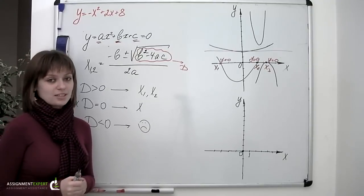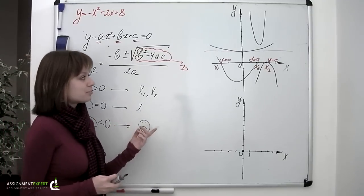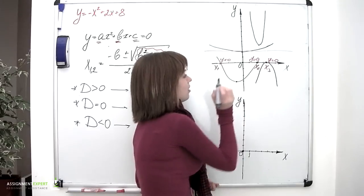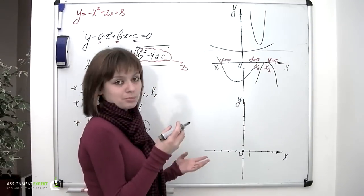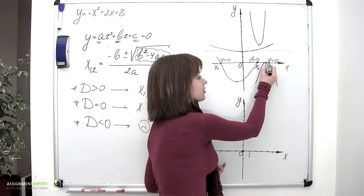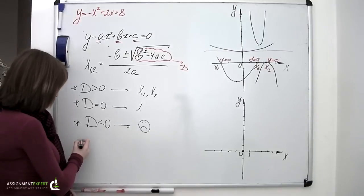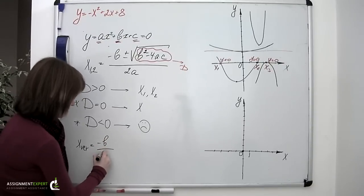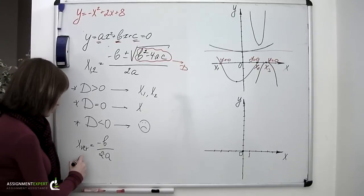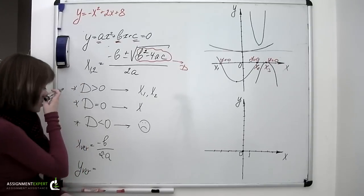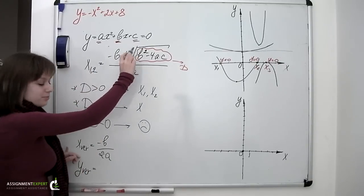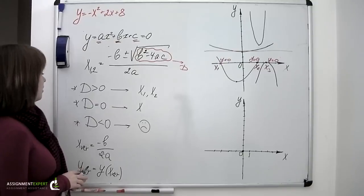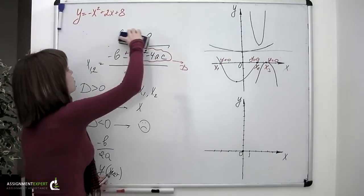Also, every parabola has its vertex. A point where the parabola reaches its minimum if the branches of the parabola are directed upwards like this, like right here or here. Or it might reach its maximum if the branches of the parabola are directed downwards like this one. The coordinates of the vertex are found like this. First goes the x-coordinate, negative b divided by 2 times a. And the y-coordinate of the vertex is found by substituting the x-coordinate of the vertex into the given equation. So this is how it goes. And now let's consider an example. Let's solve Mohamed's problem.